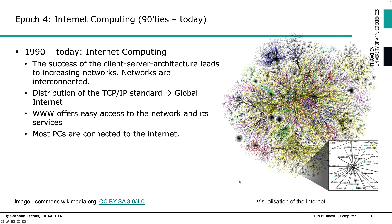Some years later — roughly the beginning or middle of the 1990s — the internet became more popular. It's hard to visualize the internet; you can see a network with lots of nodes and edges. Basically, the success of client-server architecture and small local networks led to increasingly interconnected networks. These interconnected networks are called the internet, made possible by common standards — one important one being TCP/IP, which we'll discuss next week.